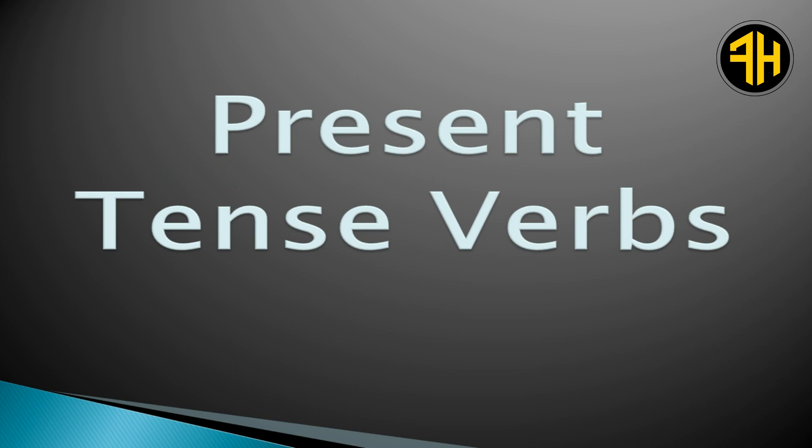Present tense verbs: An action verb that describes an action happening now is called a present tense verb. For example, 'The bird flies through the sky.' Here 'flies' is a present tense verb because it is happening right now.